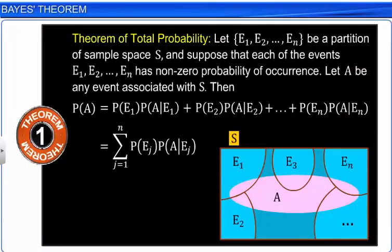Next, let's discuss the theorem of total probability, which is based on the partitions of a sample space. Let the set of events E1, E2, and so on till En be a partition of sample space S, and suppose that each of the events E1, E2, and so on till En has non-zero probability of occurrence. Let A be any event associated with S. Then, the probability of A is equal to the summation of the product of the probability of Ej and the probability of A given Ej, where j is running from 1 to n.